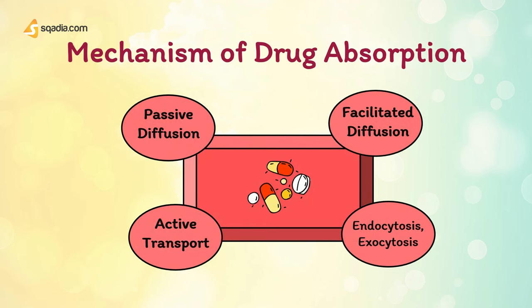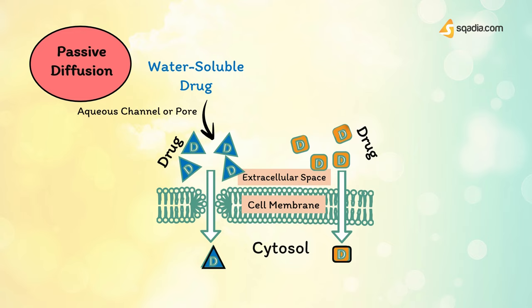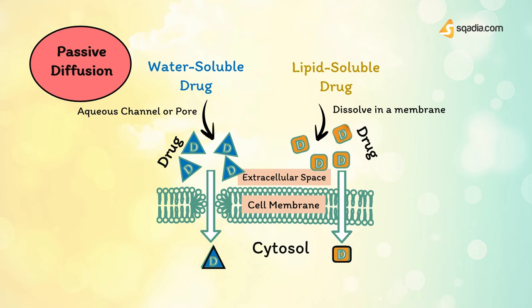Routes of administration other than intravenous may result in partial absorption and lower bioavailability. Depending on their chemical properties, drugs may be absorbed from the GI tract by passive diffusion, facilitated diffusion, active transport, or endocytosis. The driving force for passive absorption is the concentration gradient across a membrane separating two body compartments — the vast majority of drugs are absorbed by this mechanism. Water-soluble drugs penetrate cell membranes through aqueous channels or pores, whereas lipid-soluble drugs readily move across most biologic membranes due to their solubility in the membrane lipid bilayers.